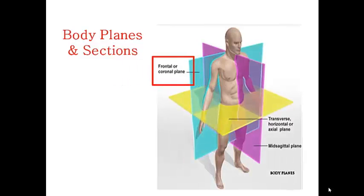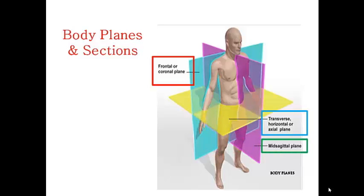Body Planes and Sections. To look at internal structures, the body is cut into sections along imaginary lines called planes. There are three types of sections at right angles to one another: the sagittal or mid-sagittal, the frontal or coronal, and the transverse or horizontal. The frontal or coronal plane divides the body into anterior and posterior parts. The mid-sagittal plane divides the body into right and left equal halves and is called the mid-sagittal or median plane.